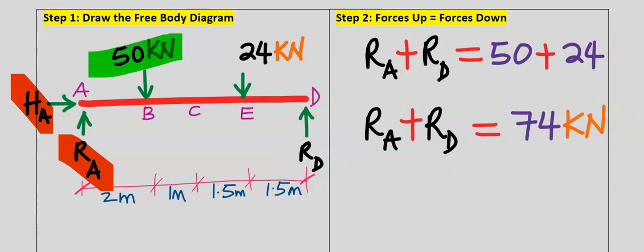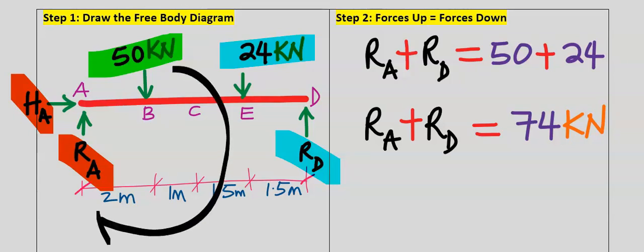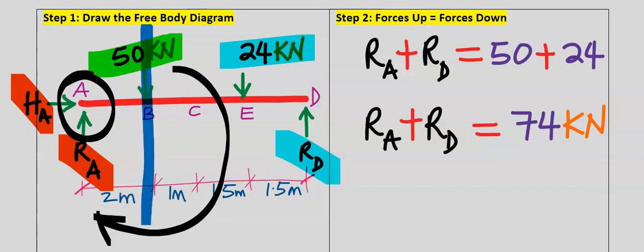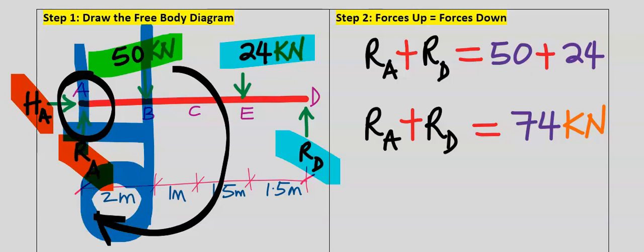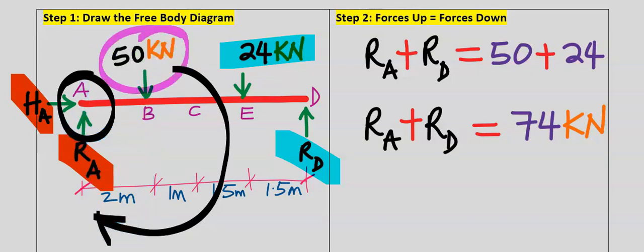Next, considering the 50 kilonewton force (assuming all other forces do not exist), this force causes the beam to turn clockwise about point A. The perpendicular distance to point A is 2 meters, so the moment is 50 multiplied by 2. This 2 meters is perpendicular, and this moment acts in the clockwise direction, so we add it to the clockwise moment.